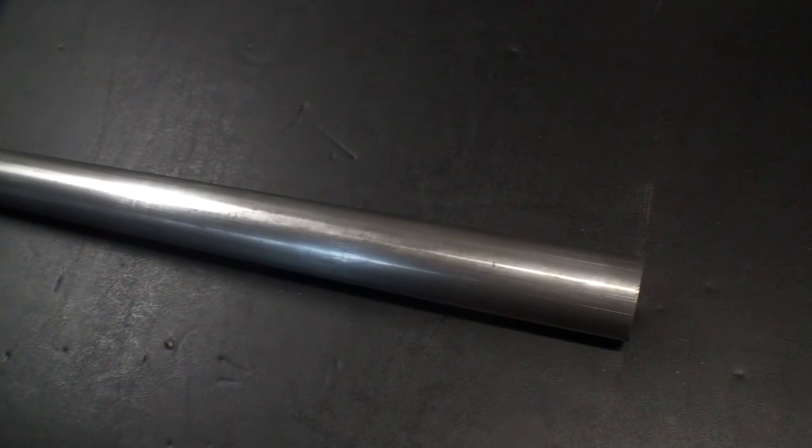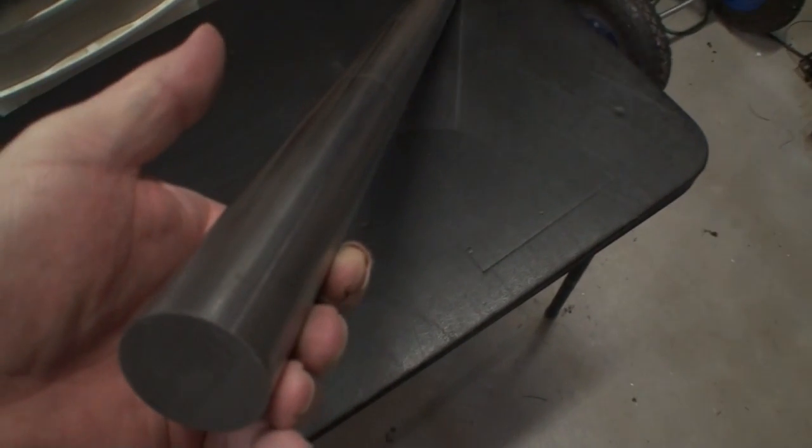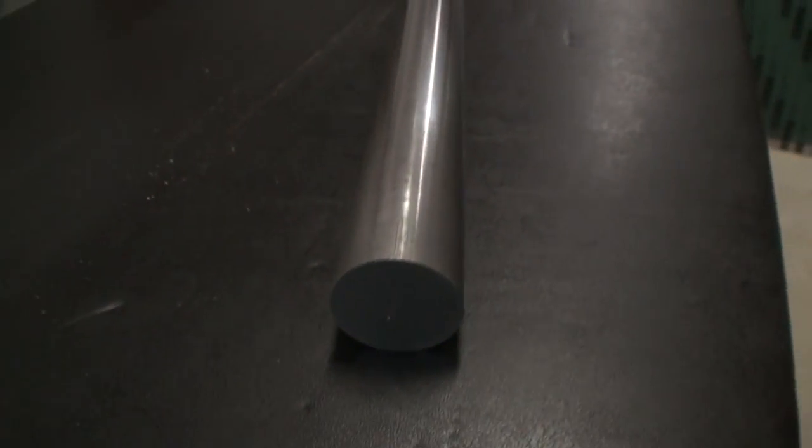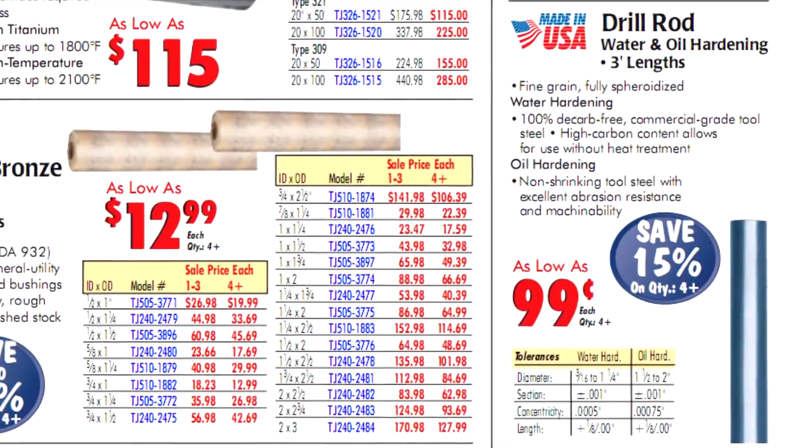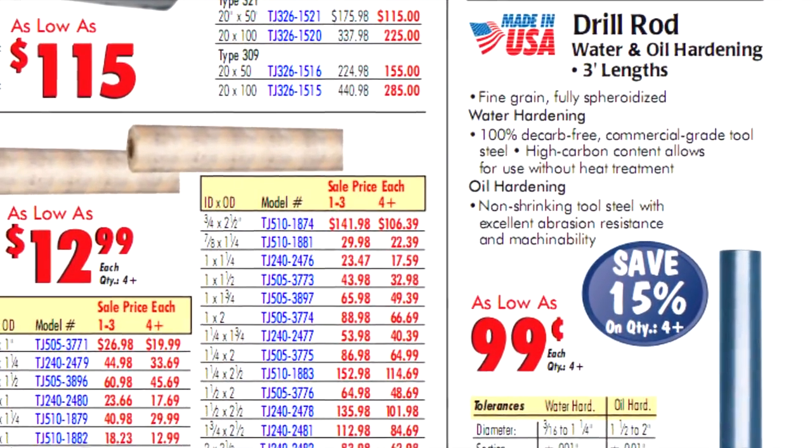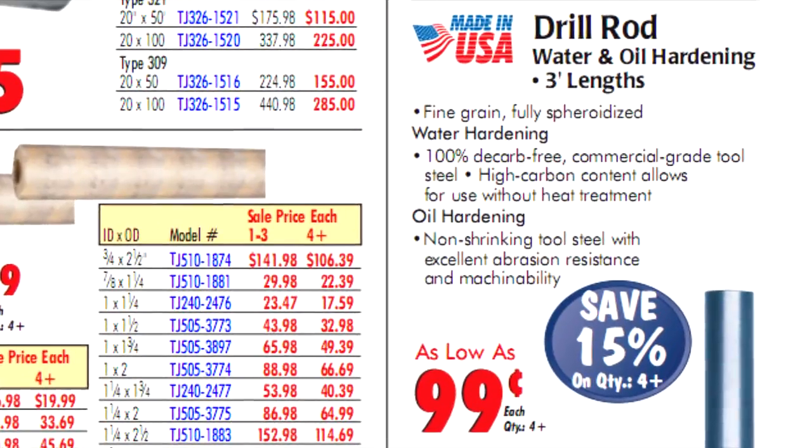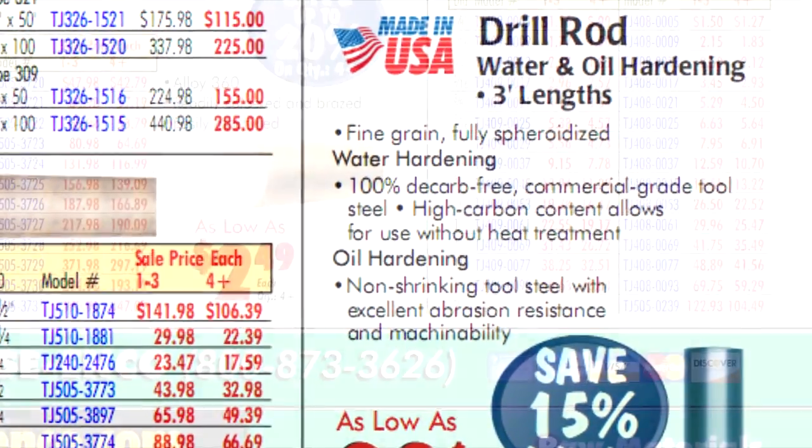The first thing you're going to need is raw material. What I found worked best is one and a half inch diameter drill rod. The British call it silver steel. It's relatively inexpensive, it seems pretty tough, it cuts nicely on the mill, and it leaves a nice finish.